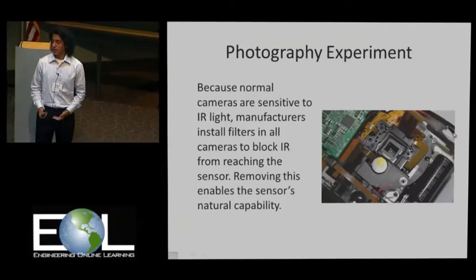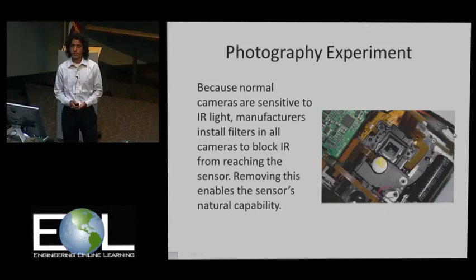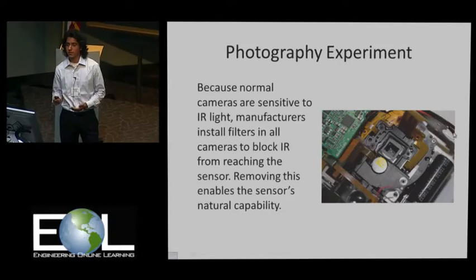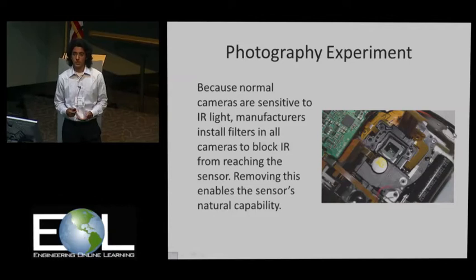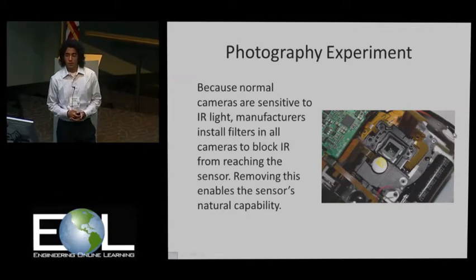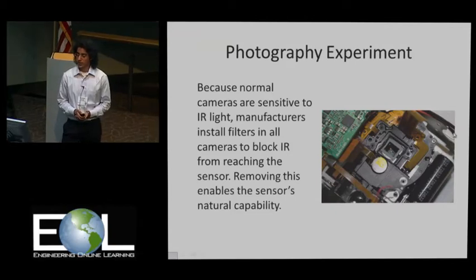The photography experiment revolved around the idea that infrared cameras would capture a broader part of the spectrum than visible light, because the infrared spectrum is beyond the visible light spectrum, so we could observe some features which could not be observed with a visible light camera. But this involved taking apart the camera and removing the infrared light filter, and in that place attaching a visible light filter for the camera.